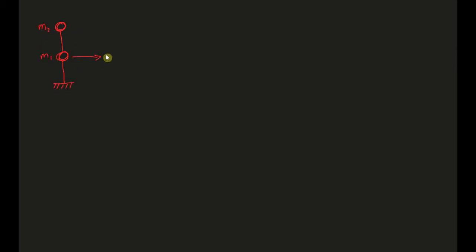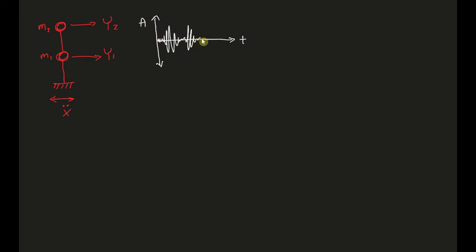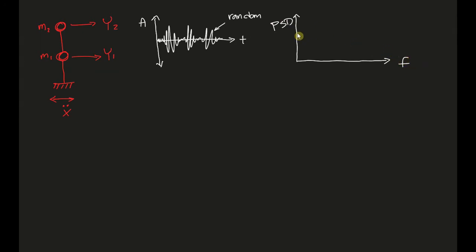Now let's formulate an experiment with a two-story building. We have mass m1 and mass m2, with motions y1 and y2 as the degrees of freedom. The input into the system is x double-dot, the ground acceleration. We introduce a white noise input acceleration, which is a random vibration that has equal energy at all frequencies — a flat power spectral density plot.